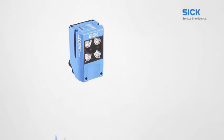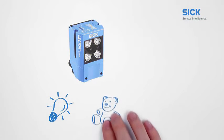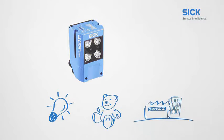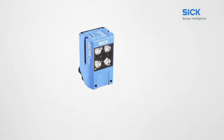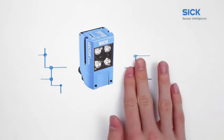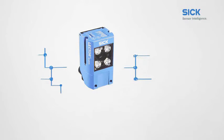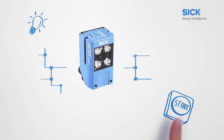The Lector 620 is clever, simple, and industrial. Impressive reading performance for a broad range of code types. Integrated interfaces enable communication with all relevant industrial networks, and clever functionalities make commissioning and operation easy.